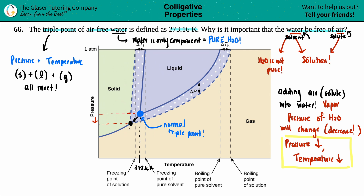So this is your triple point of the solution. That's why the water needs to be free of air: if air is in there, you're changing your mole fractions, the vapor pressure changes, and the drop in pressure leads to a decrease in temperature. That's basically it — I hope this helped. Thank you so much for viewing the video. Subscribe to the channel, and I look forward to helping you in future lessons.